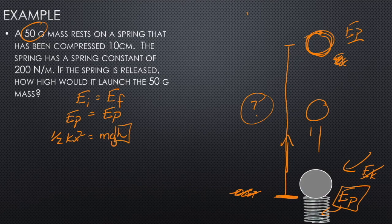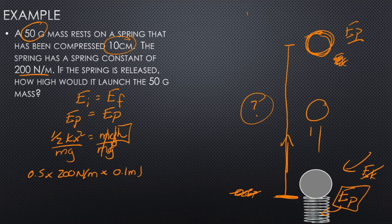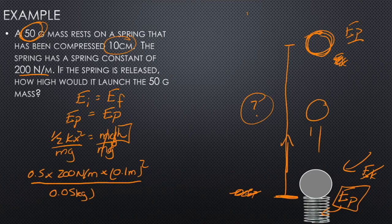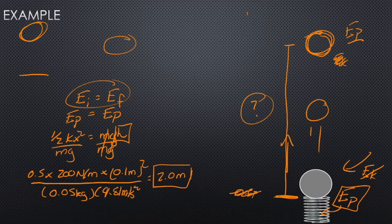So our formula is Ep(spring) = Ep(gravitational), or ½kx² = mgh. Solving for h: h = ½kx² / (mg). Plugging in: h = (0.5 × 200 × (0.1)²) / (0.05 × 9.81). That gives a height that rounds to 2.0 meters for our maximum height. Same approach: start with EI = EF, figure out what types you have at the start and end, and solve your equation for the asked-for value.